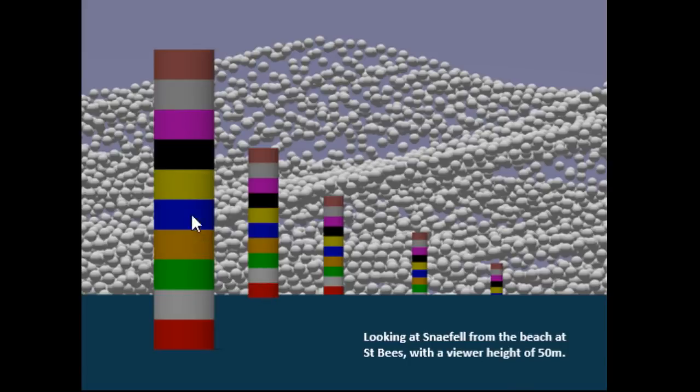What I've done is set these five columns up at differing distances away. So this one is 10km, 20km, 30km, 40km and 50 kilometres away from the beach. Each column is 100 metres high and then I've given each 10 metre band a different colour. I did that so you can see easily where they intersect with the horizon.